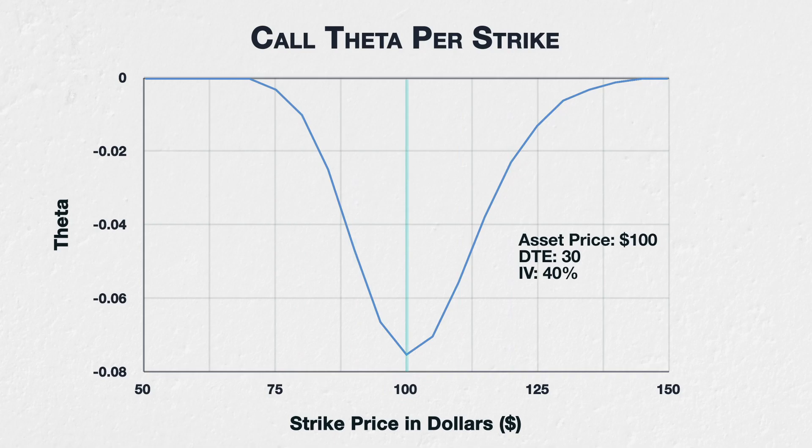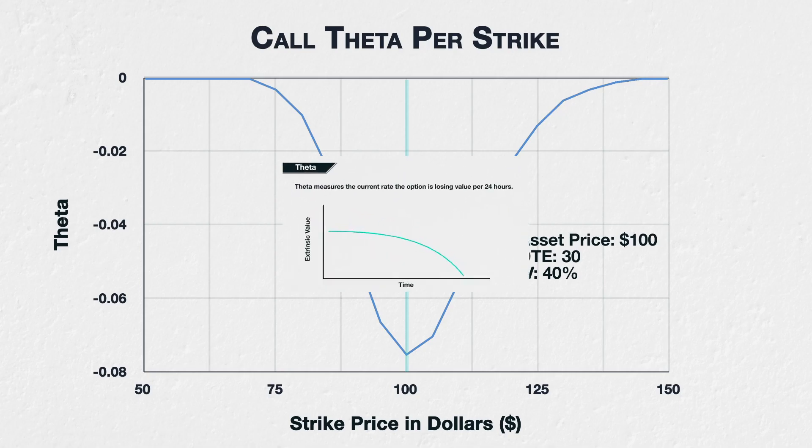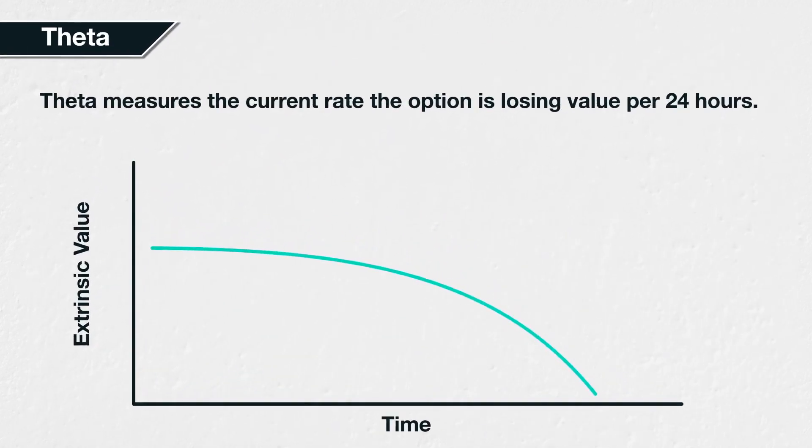More generally, theta is greatest for at-the-money options and then reduces the further away from the current underlying price the strike prices are. This stands to reason because extrinsic value is greatest for at-the-money options, so they have the most value to lose. Theta is an erosion of extrinsic value by the passage of time, and at expiration all extrinsic value must be gone.